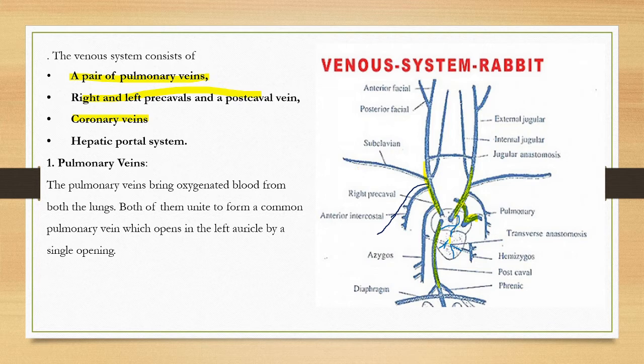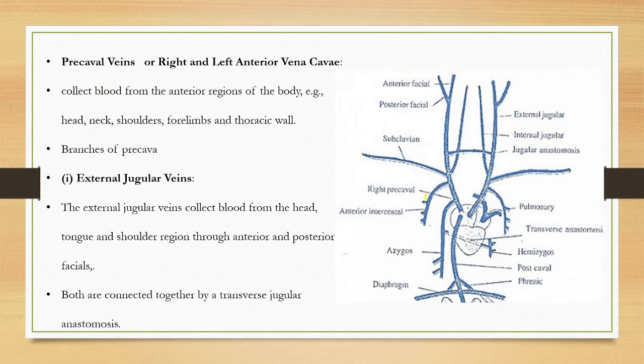Let's look at pulmonary veins. The pulmonary veins carry oxygenated blood from both lungs. Both of them unite to form a common pulmonary vein, left and right pulmonary veins. They join together and then open into the left atrium by a single opening.